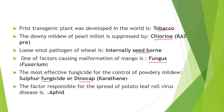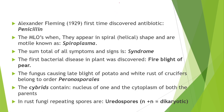The factor responsible for the spread of potato leaf roll virus disease is aphids. Alexander Fleming first discovered the antibiotic penicillin in 1929. Mycoplasma-like organisms, when they appear in spiral shape and are motile, are known as spiroplasma.